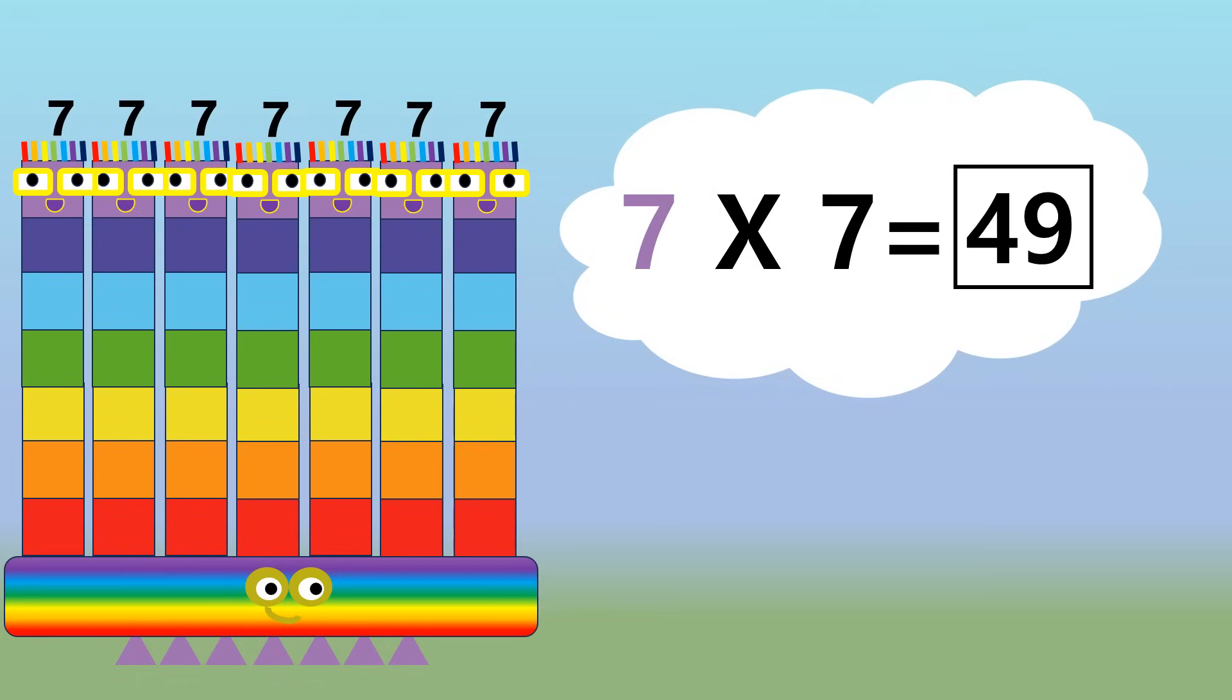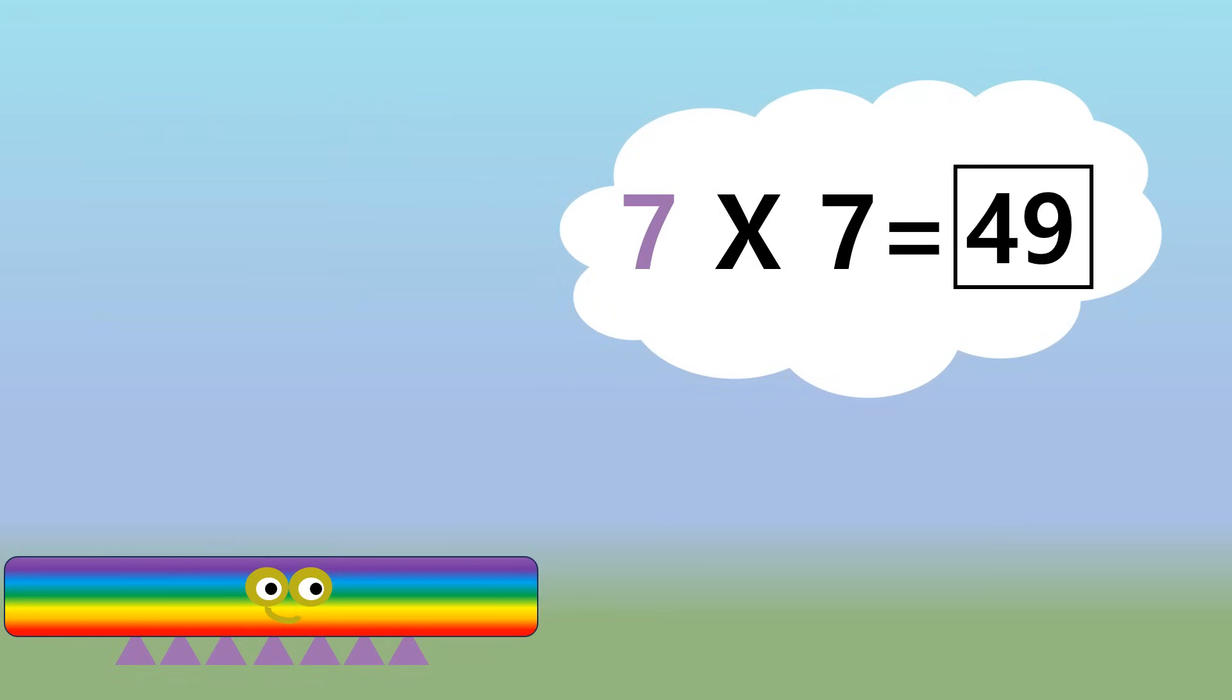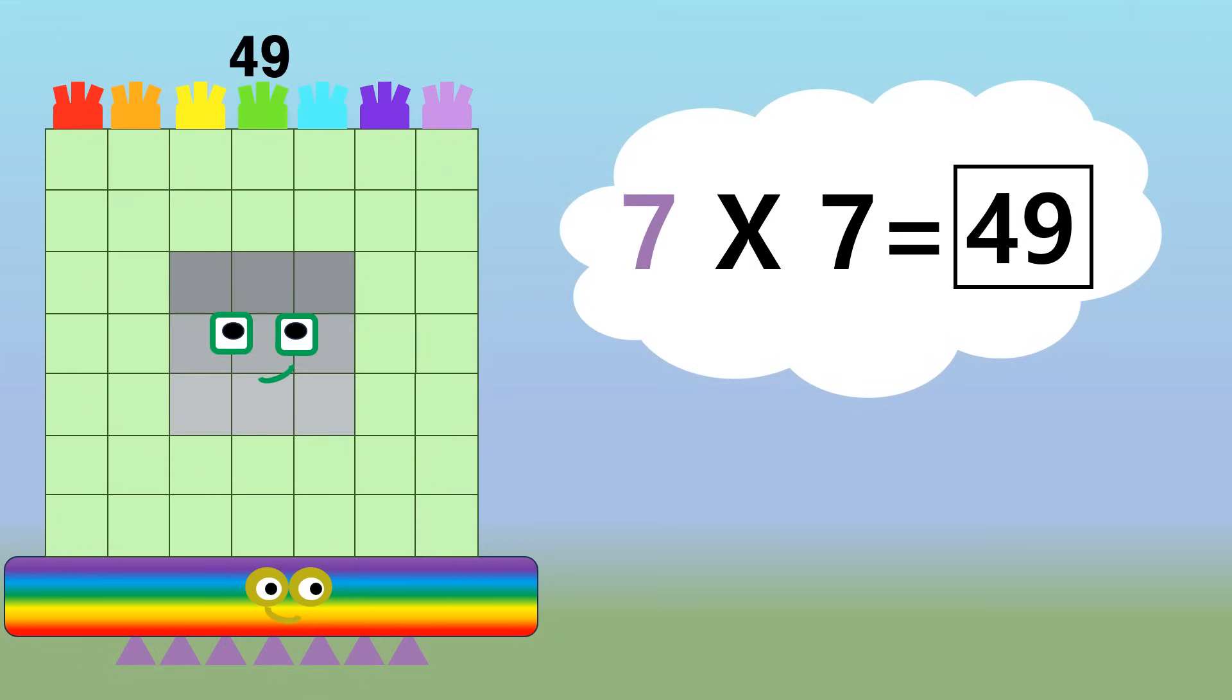7 7s. They make 49. 49. A big square of rainbows, come rain or come shine.